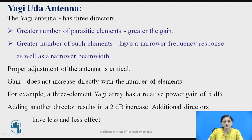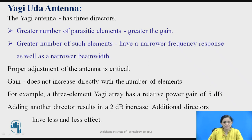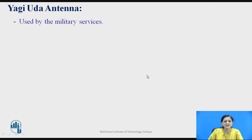The Yagi-Uda antenna with 3 directors provides greater gain when the number of parasitic elements is greater. However, a greater number of elements results in a narrower frequency response and narrower beam width, which increases directivity but makes proper adjustment of the antenna critical. The gain does not increase directly with the number of elements — for example, a 3-element Yagi array has a relative gain of 5 dB, and adding another director results in just a 2 dB increase. Additional directors have very little effect on gain.